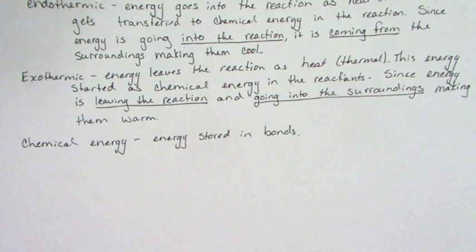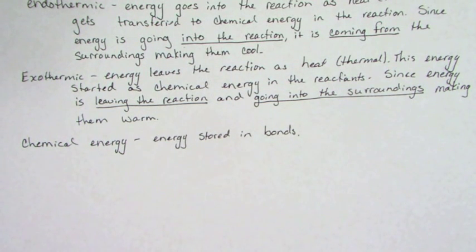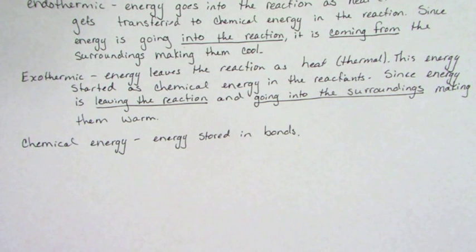A little how-to video on the energy bar charts for endothermic and exothermic reactions. We did bar charts, and the first part was just looking at the energy in the thermal — temperature — and then in the phase: solid, liquid, gas. Now we're going to look at the ECH column, what's going on with the chemical energy, looking at endothermic and exothermic reactions.